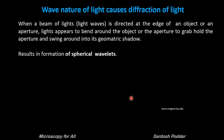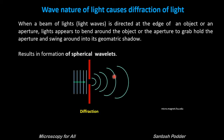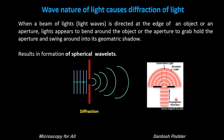The wave nature of light causes diffraction of light. So what is diffraction? When a beam of light is directed at the edge of an object or an aperture, light appears to bend around the object or the aperture, to go around its geometric shadow. This results in the formation of spherical wavelets from each and every point of these waves. In this image you can see that undeviated light goes straight away from the aperture, whereas the deviated or diffracted light spreads outward.